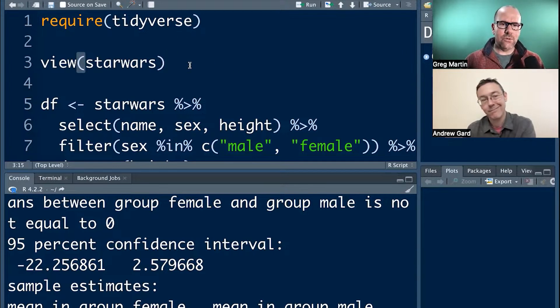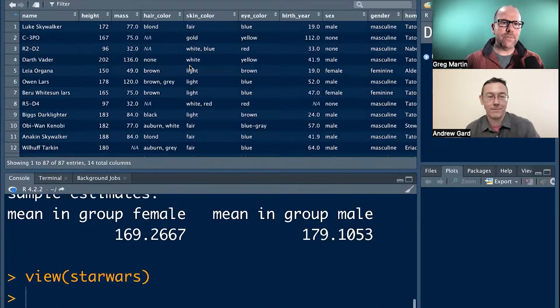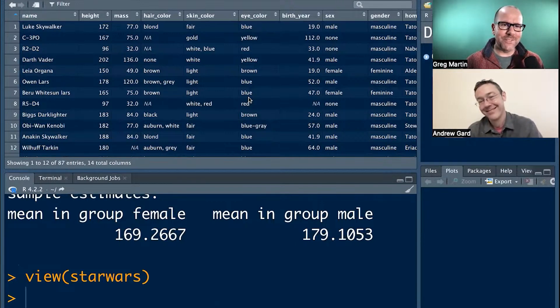We're looking at the Star Wars data set and most people have used it. It's a great data set to practice with. And I'm going to do a quick t-test. It's easy peasy, lemon squeezy. I'm going to compare the height of males and females and ask the question, you know, is there a statistically significant difference between the height?